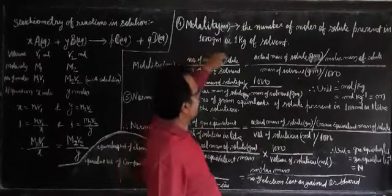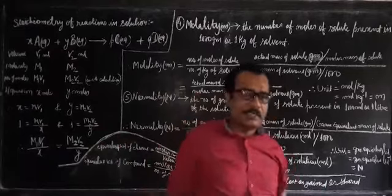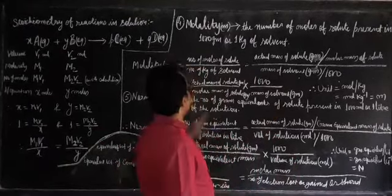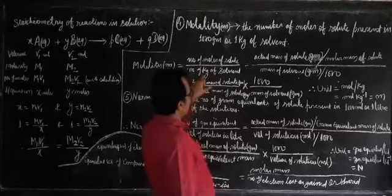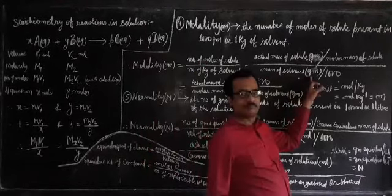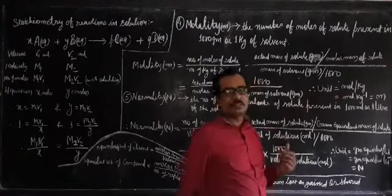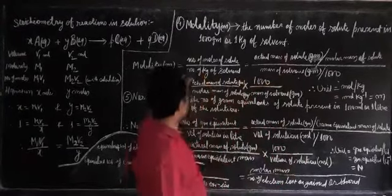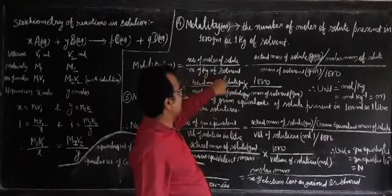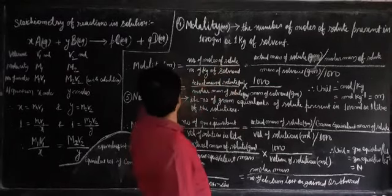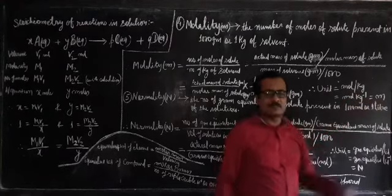The number of moles of solute equals actual mass of solute divided by molar mass of solute. The mass of solvent in grams divided by 1000 gives kg. After rearranging, we get the molality formula: molality = (mass of solute / molar mass) × (1000 / mass of solvent in grams). The unit of molality is mole per kg, written as mol kg⁻¹ or simply represented by small m.